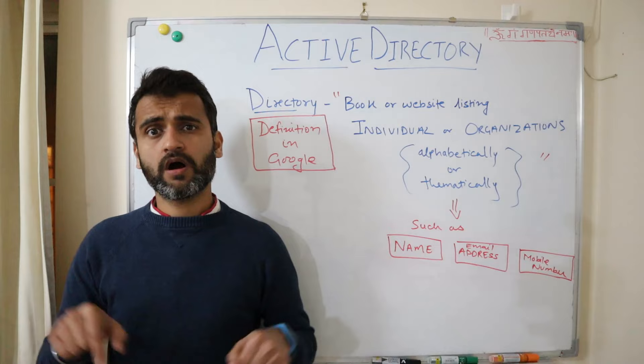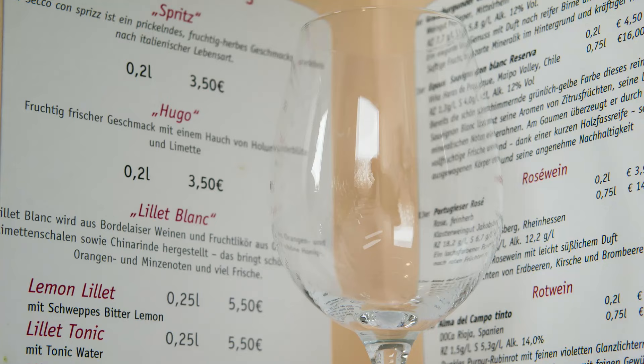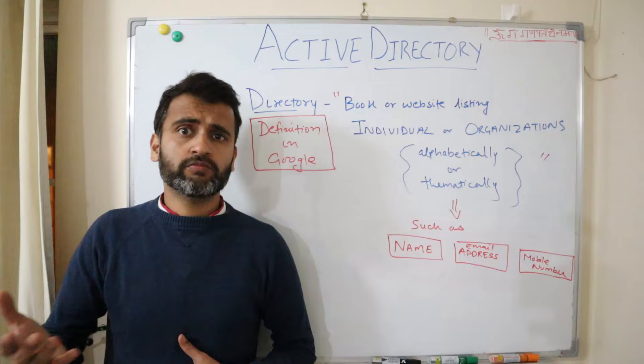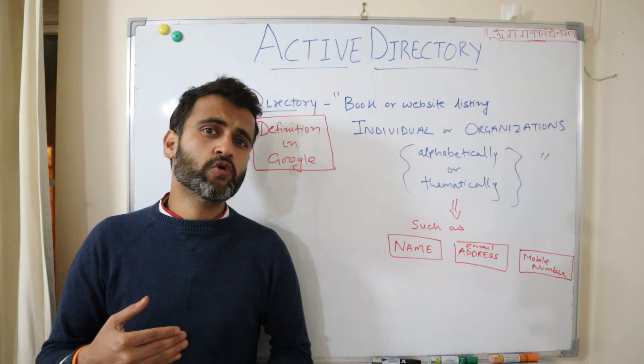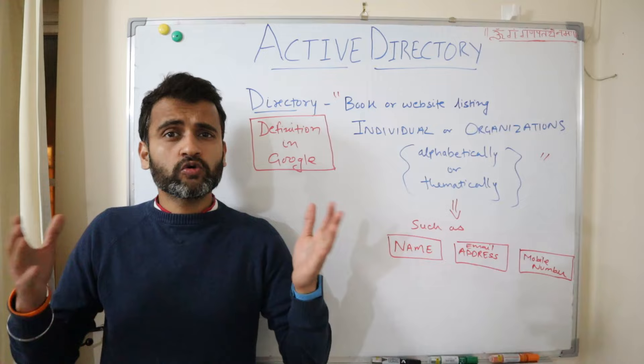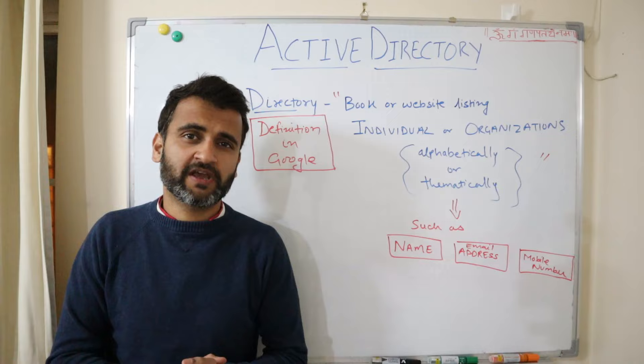A real life example to understand Active Directory could be the menu card of any restaurant. Whenever you go to a restaurant, you get a dining menu and you have all the different cuisines available under different sections — appetizers, starters, seafood, Chinese, Asian food. When you go to a specific section and a specific food item, you exactly understand the ingredients of that particular item. For a customer, it's very easy to see everything at one place and order something.